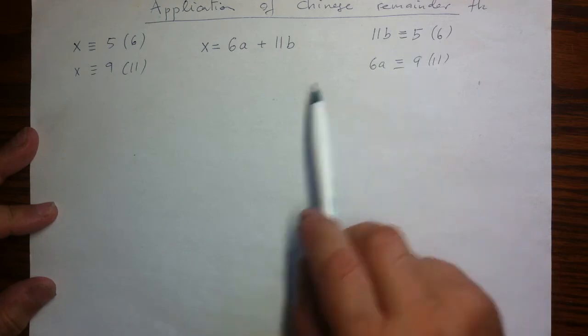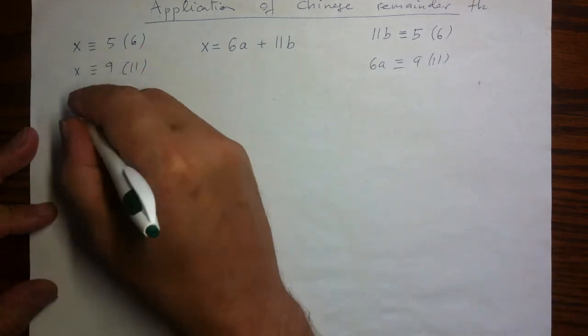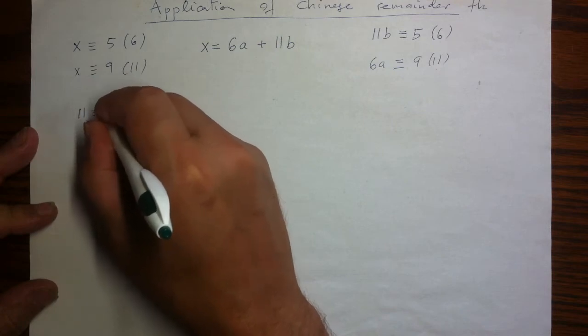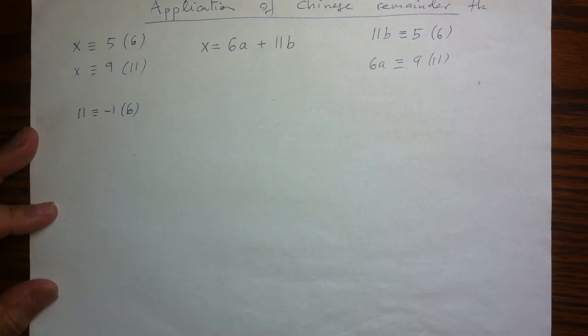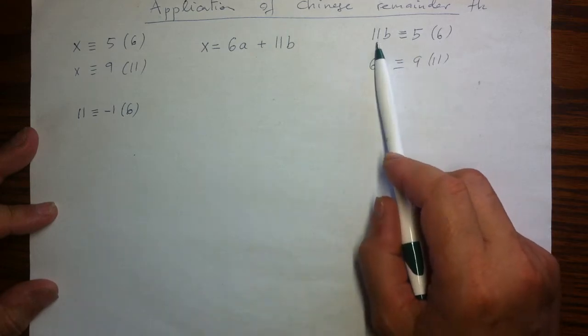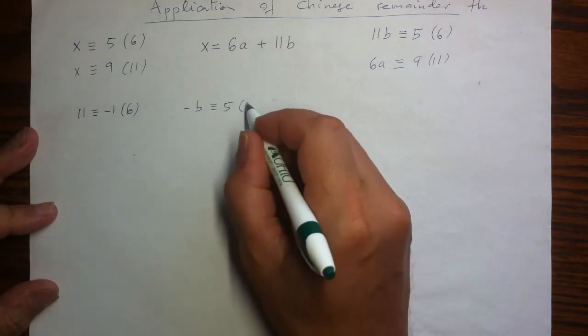So let's solve it for b first. Well, 11 mod 6 is as good as negative 1. So I'm going to use negative numbers because it's going to simplify my computations. So instead of 11, I could think of negative b being congruent to 5 mod 6.